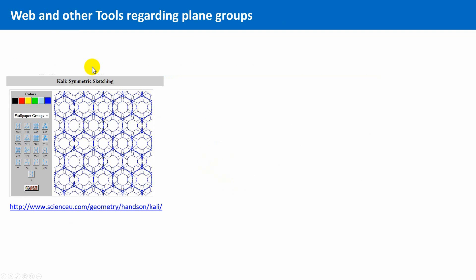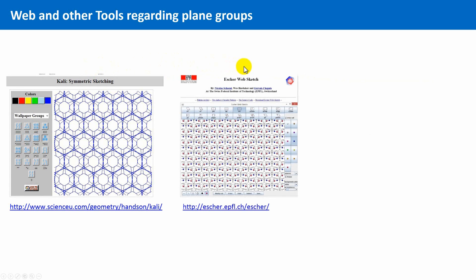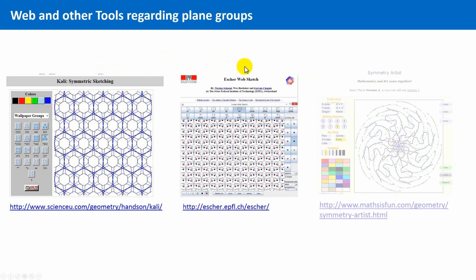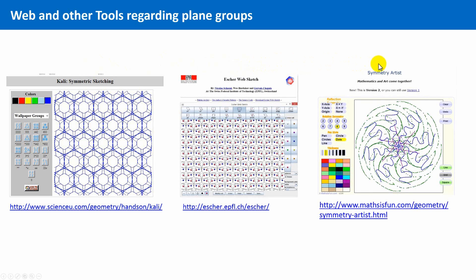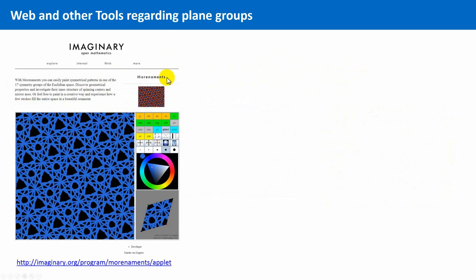If you want to design symmetric patterns on your own, either with point symmetry or with translational symmetry in two dimensions, then there are a variety of very useful tools on the Internet, Kaylee Symmetric Sketching or the Asher WebSketch tool, the Symmetry Artist or also this tool called Monuments.